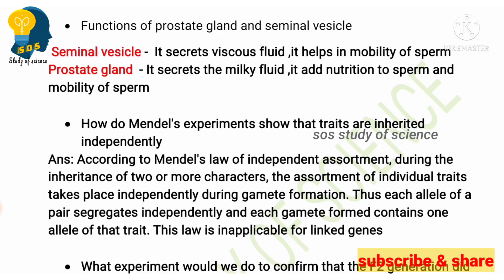Next: how do Mendel's experiments show that traits are inherited independently? This is very important — it is based on Mendel's dihybrid cross. According to Mendel's law of independent assortment, traits are inherited independently, as seen in the dihybrid cross. During the inheritance of two or more characters, the assortment of individual traits takes place independently during gamete formation. Each allele of the pair segregates independently, and each gamete formed contains one allele of the trait.